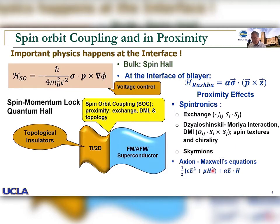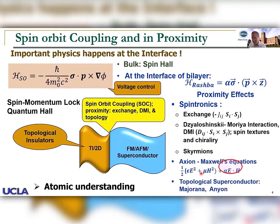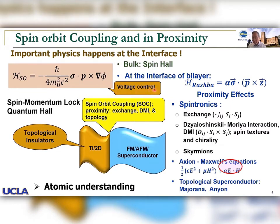The Dzyaloshinskii-Moriya interaction results in spin texture and chirality — for example, skyrmions and other topological phase transitions such as axions and Majorana or anyons. The atomic understanding at the interface is very important, but in the interest of time I will discuss mostly spintronics. Due to spin-orbit interaction, spin Hall effect occurs in the bulk and at the interface, mostly due to the Rashba effect.